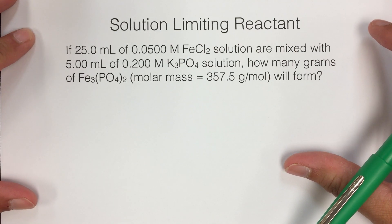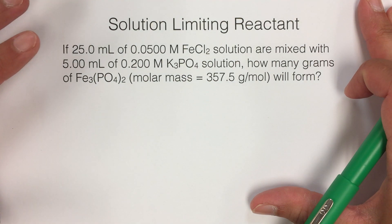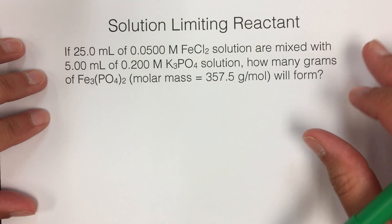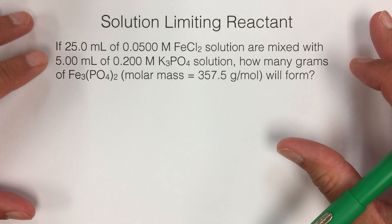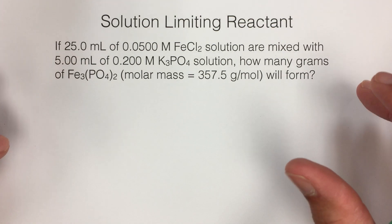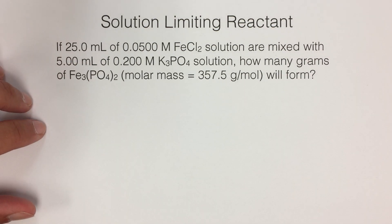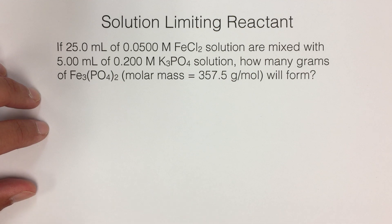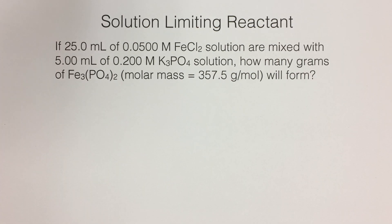These are big problems and they require a lot of attention to detail. So just keep track of what you're doing, be very neat in your work, and hopefully it'll make sense. This one says if 25.0 milliliters of 0.0500 molar iron(II) chloride solution are mixed with 5.00 milliliters of 0.200 molar potassium phosphate solution, how many grams of iron(II) phosphate, and it gives you the molar mass, how nice, will form.